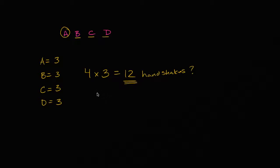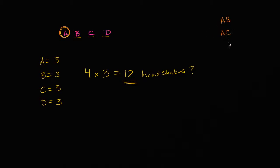So let's actually draw it out — let's visually represent each handshake that goes on. Let's talk about all of the handshakes that A engages in. A is going to shake B's hand, A is going to shake C's hand, A is going to shake D's hand. We're then saying that B is going to shake A's hand, B is going to shake C's hand.